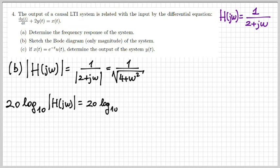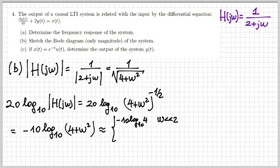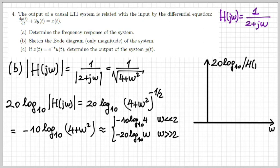In a decibel (logarithmic) scale, we calculate 20·log₁₀ of the magnitude, which simplifies to −10·log₁₀(4 + ω²). We can approximate this by considering two cases: when ω is much smaller than 2, the term 4 prevails, so we approximate with −10·log₁₀(4); and when ω is much larger than 2, ω² prevails, so we approximate with −20·log₁₀(ω). Let's draw this.